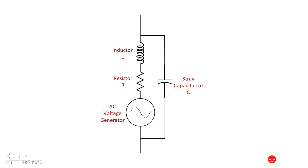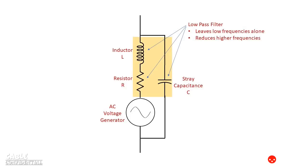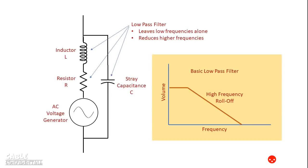The way these elements are arranged creates what is called a low pass filter. This means that it will leave low frequencies alone, but reduce the level of higher frequencies. Here's a curve that shows what a typical low pass filter looks like, and you can see that the level rolls off as the frequency increases.